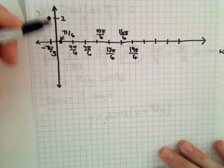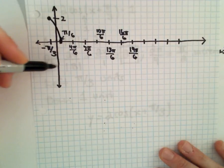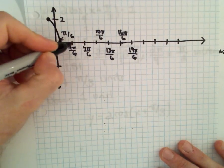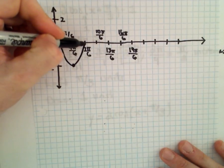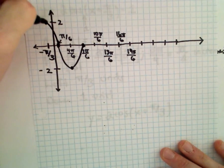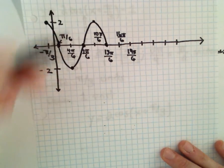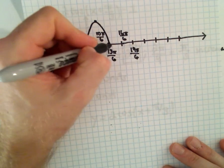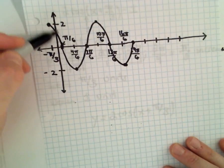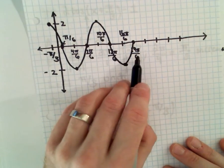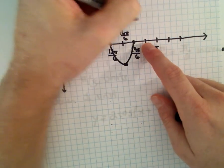So we start off at positive 2 at negative pi over 3. At the next increment, pi over 6, we're down at 0. At 4 pi over 6, we're down at negative 2. At 7 pi over 6, we're back at 0. At 10 pi over 6, we're at positive 2. At 13 pi over 6, we're back at 0. At 16 pi over 6, we're down at negative 2. At 19 pi over 6, we're back at 0. One more period: at 22 pi over 6, we're up at positive 2.